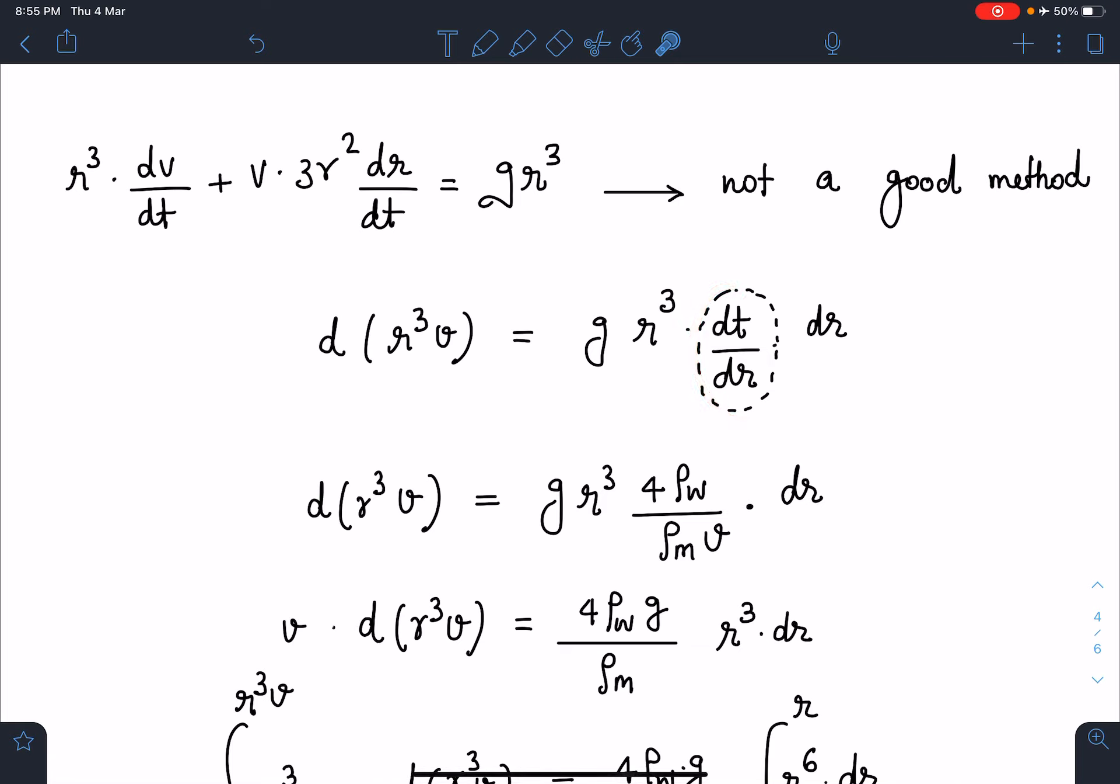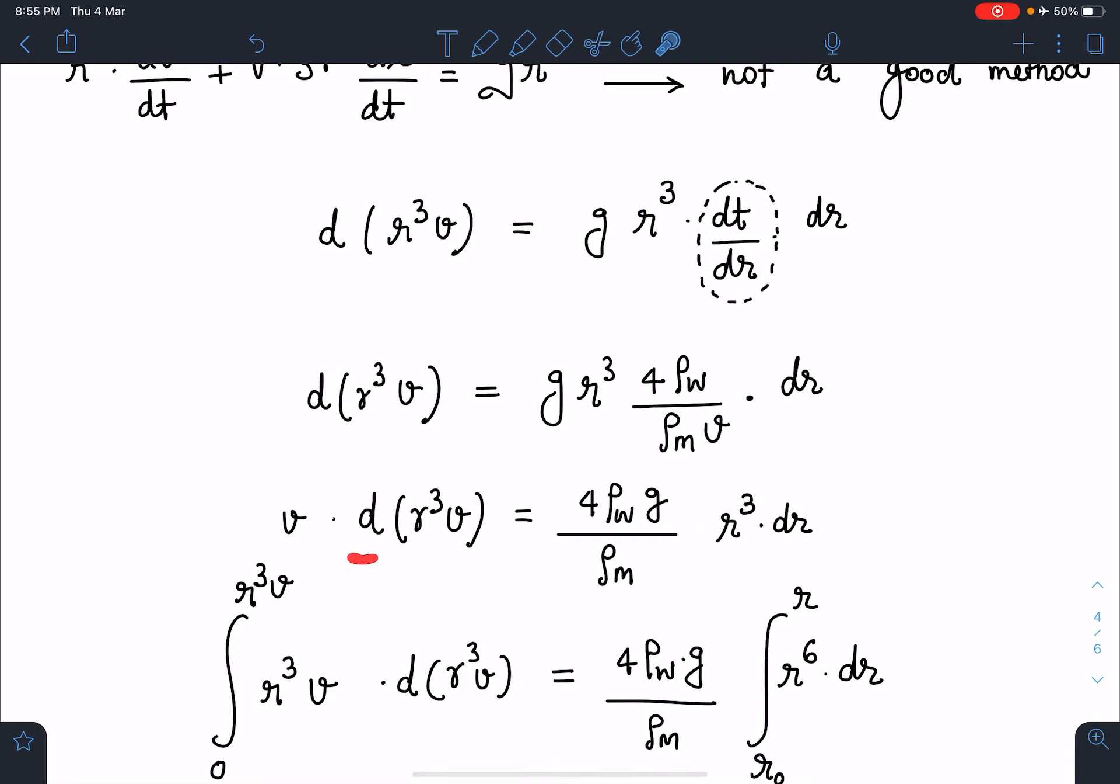When I substitute the value of dr/dt and take v to this side, I get v·d(r³v) = (4ρ_w·g/ρ_m)·r³·dr. If somehow I multiply this side with r³ so that it is like t·dt, then I can integrate this part entirely. I will multiply r³ on both sides. If you see, this becomes r^6 and this becomes r³v, so it's like t·dt.